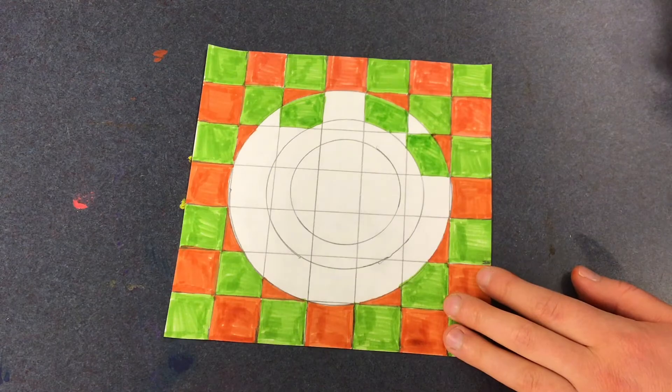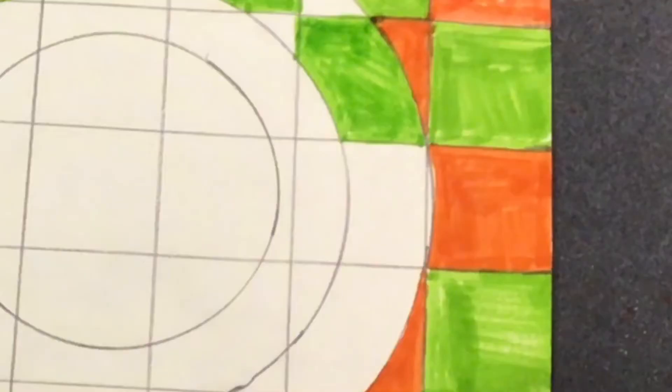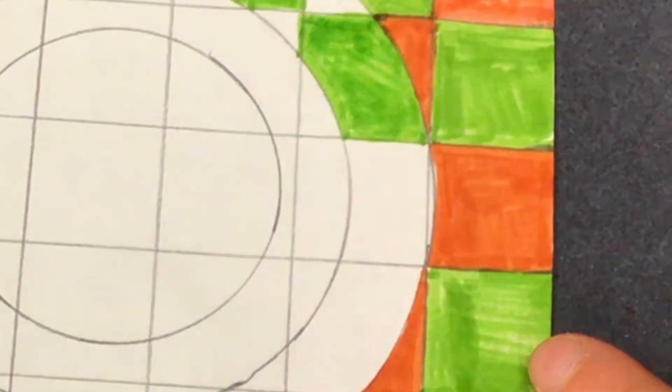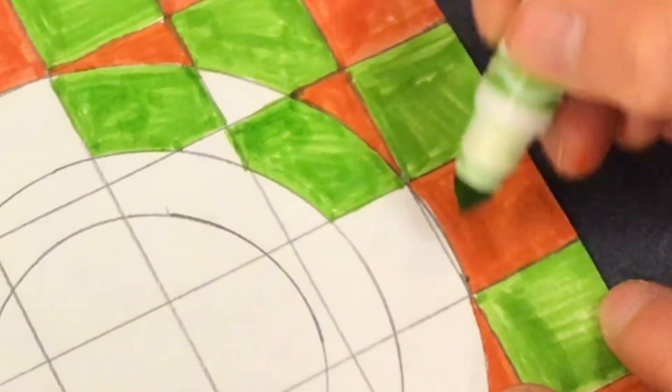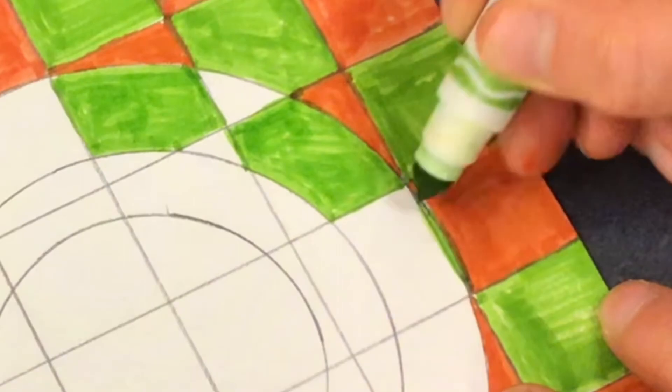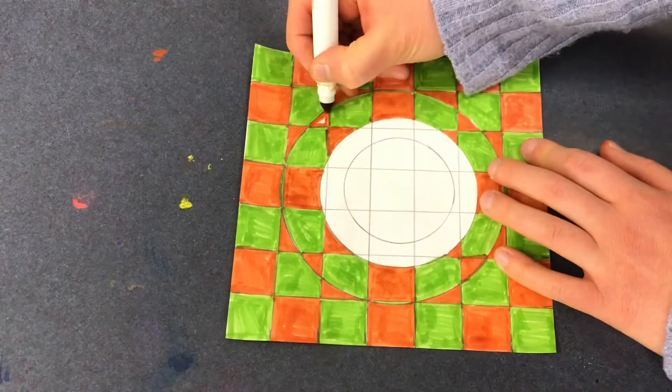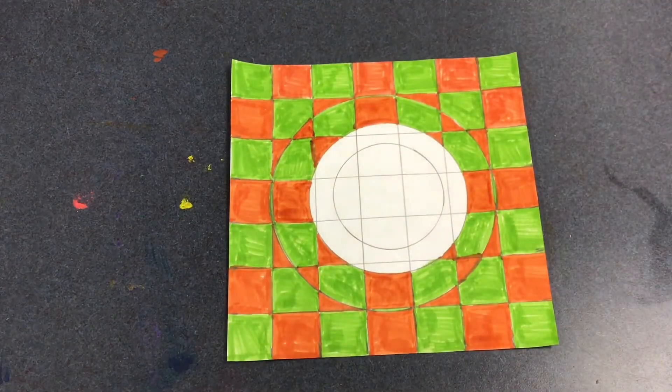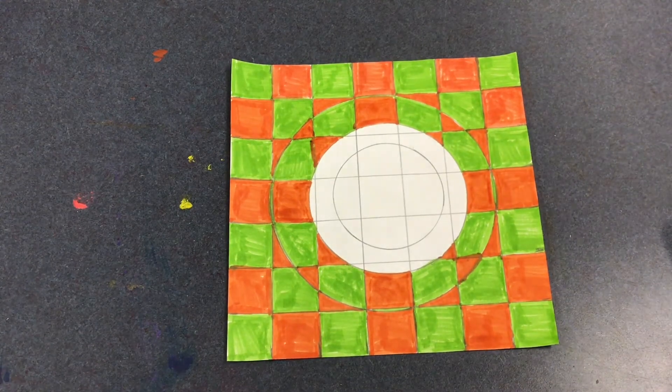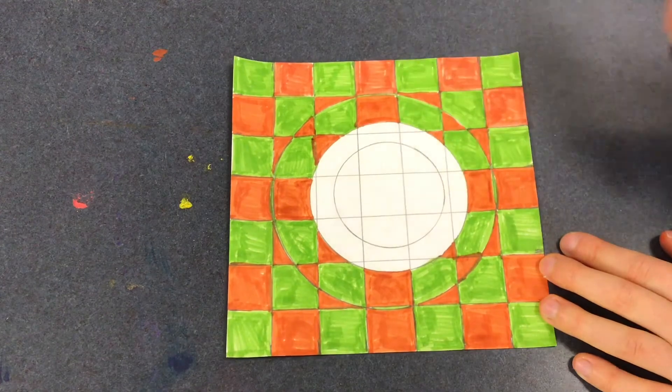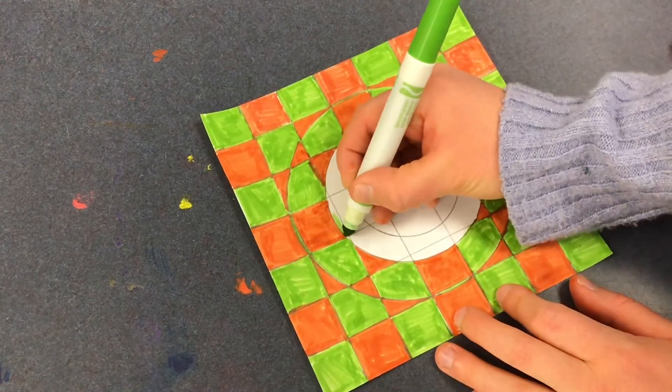Now I want you guys to notice something super important that I came across. Take a look at that little teeny tiny sliver that's right inside the circle there. It's just a teeny little part of that orange square. So I need to color just that teeny teeny tiny part of the orange square green so that the square right next to it can be orange. So find those teeny teeny tiny little sections and make sure you color them right.